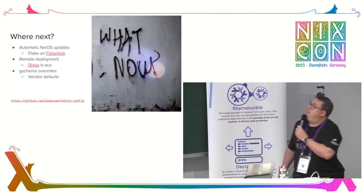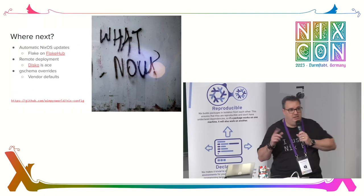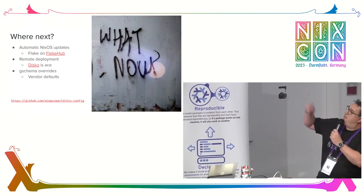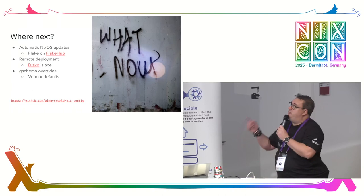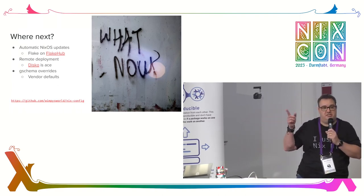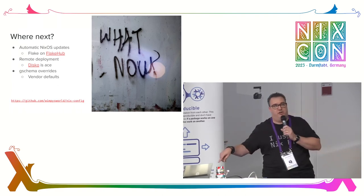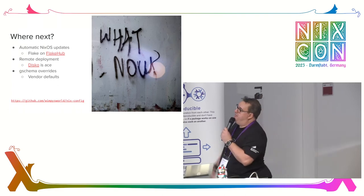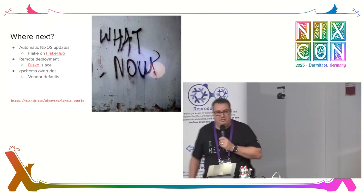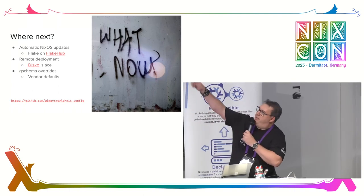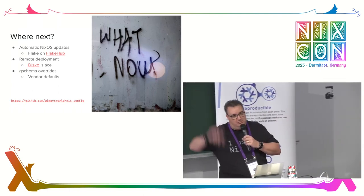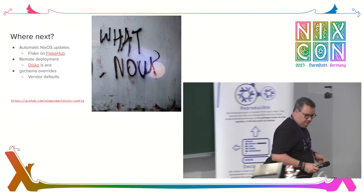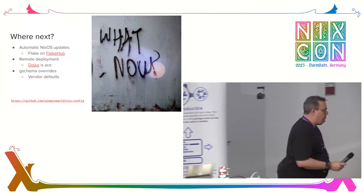Where next? I haven't fully solved NixOS automatic updates, but I'm going to make a flake for that. Remote desktop deployment using Disco — there's a talk about that tomorrow, I'm looking forward to it. And G-Schema provides for my vendor defaults. Thank you for listening — and that's my config there, so if you want to have a look at this, go and take a look. Thank you.